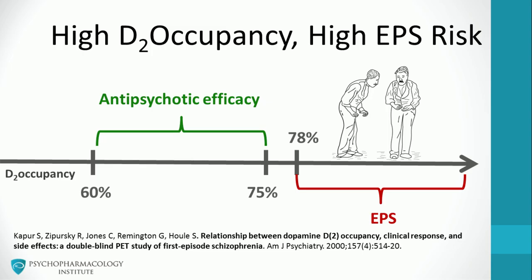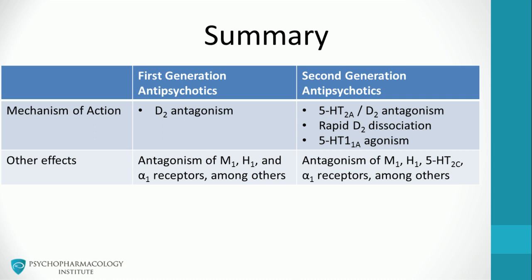PET studies show that D2 receptor occupancy predicts both clinical efficacy and extrapyramidal symptoms. This graphic shows that occupancies in the range of 60 to 75% are associated with clinical antipsychotic efficacy, while increasing the dose above 78% occupancy increases the risk of extrapyramidal symptoms. In clinical terms, the optimal dosing of any antipsychotic agent is one that occupies between 60 to 75% of D2 receptors.